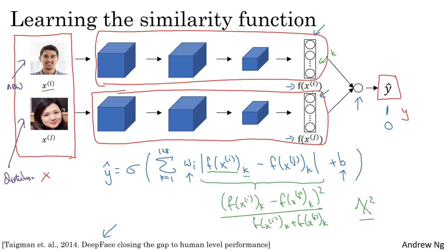When the new employee walks in, you can use this upper confidence to compute that encoding and use it to compare to your pre-computed encoding and then make a prediction y hat. Because you don't need to store the raw images and if you have a very large database of employees, you don't need to compute these encodings every single time. This idea of pre-computing can save significant computation.